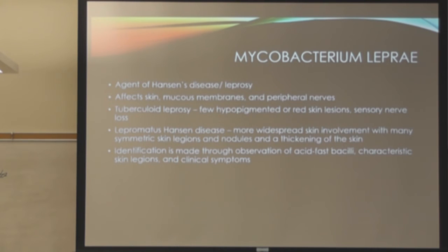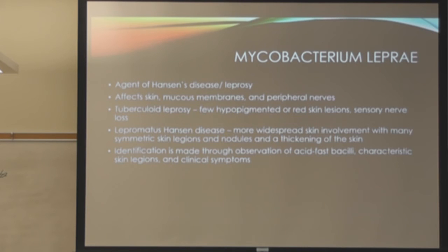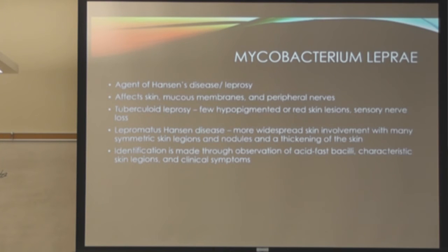M. leprae is the agent of Hansen's disease, or leprosy. It affects skin, mucous membranes, and peripheral nerves. You have two types: tuberculoid leprosy and lepromatous (Hansen's disease), which is more widespread, systemic, with skin lesions and nodules. Identification uses acid-fast staining combined with skin lesion examination and clinical symptoms. Importantly, it cannot be cultured in vitro — one of the only ones you cannot grow in the lab.